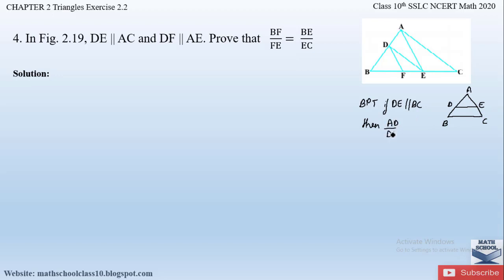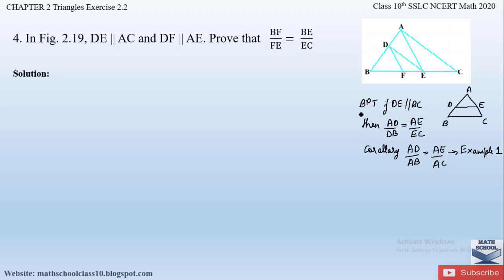That is, AD/DB is equal to AE/EC. There is also a corollary to this theorem which says: if DE is parallel to BC, then we can also say that AD/AB is equal to AE/AC. This corollary is example number one in your textbook, which I have already explained in my previous videos.